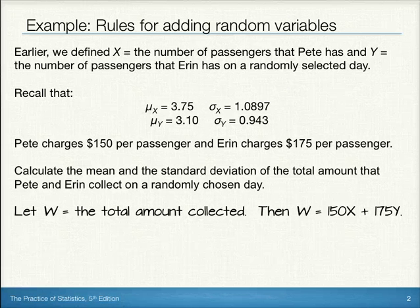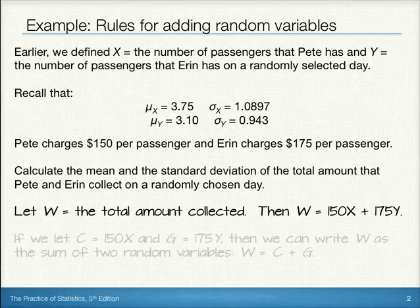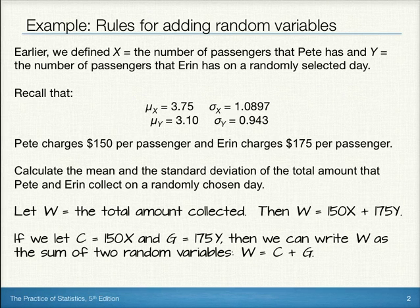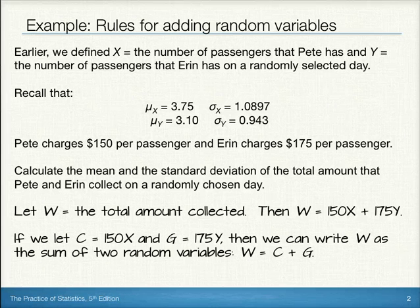Then W would equal 150 times X, that's $150 for each passenger that Pete collects, plus 175Y, or $175 per passenger that Aaron collects. If we let C equal 150X and G equal 175Y, then we can write W as the sum of two random variables. That is, W equals C plus G.